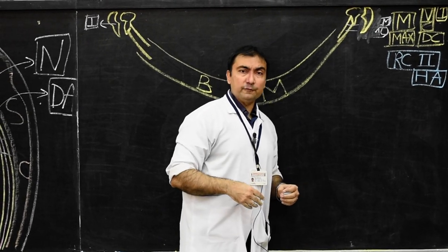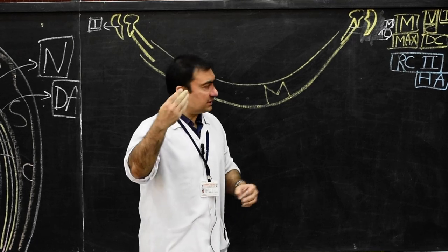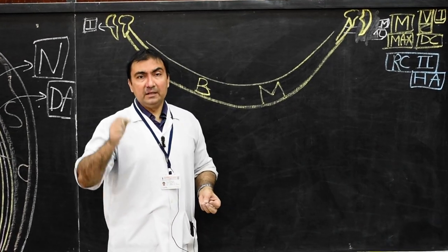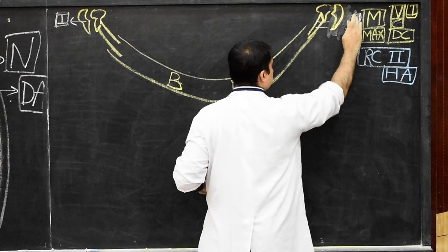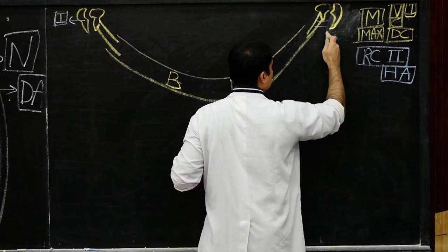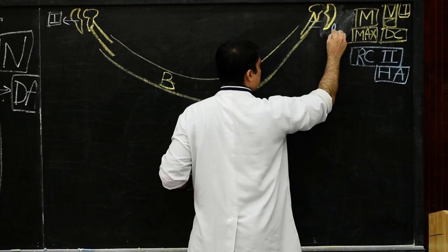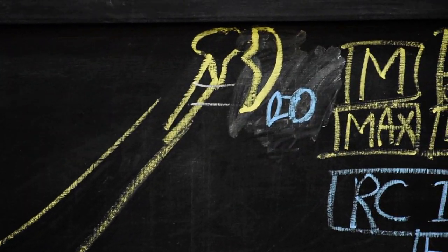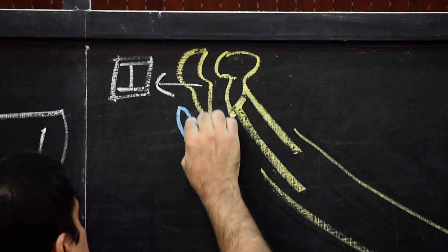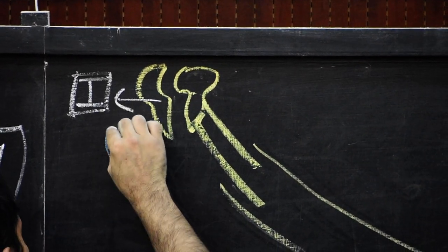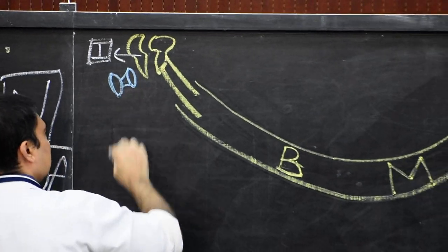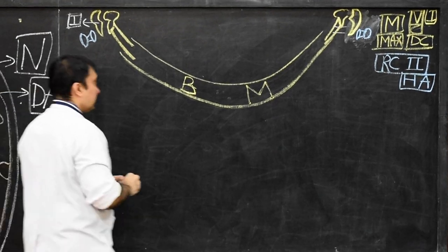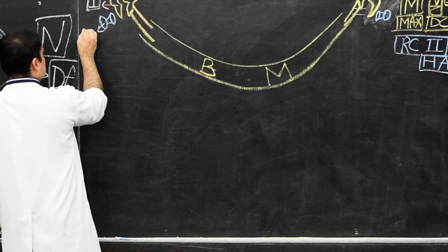From the dorsal component of Reichert's cartilage — the second arch — the structure that will develop is the stapes, the third ossicle of the middle ear. I will draw the stapes here from the dorsal side of the second pharyngeal arch.